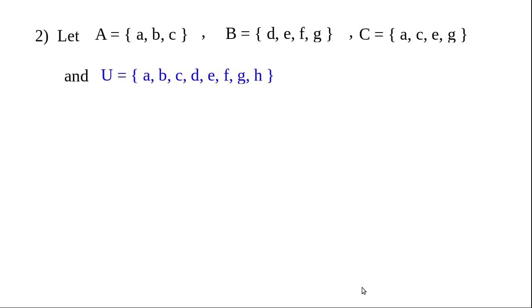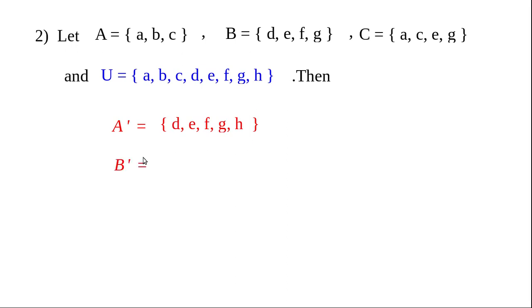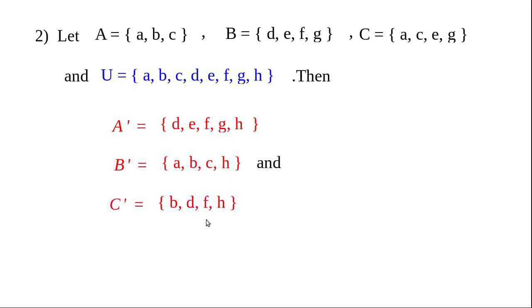Another example — Example number 2. A, B, C and U are given as letter-element sets. Then A dash equals the set of all elements in U not in A, which gives {D, E, F, G, H}. Write B dash and C dash yourself. B dash equals {A, B, C, H} and C dash equals {B, D, F, H}.